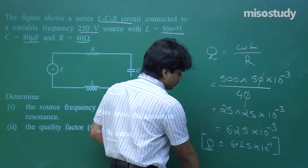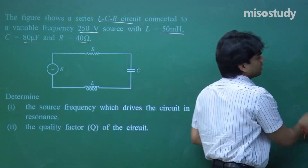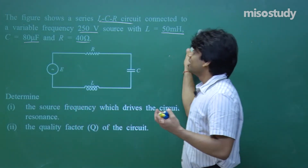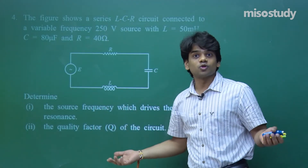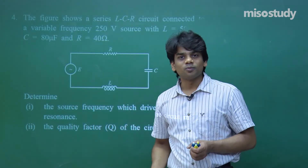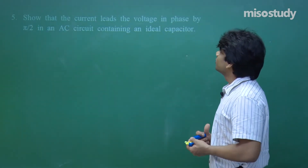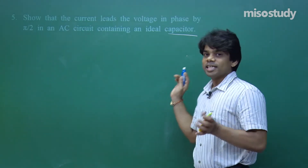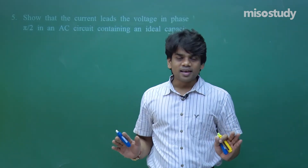Hope you are getting this. Solving questions is required for getting a hold of any chapter — it is very important for you all to practice more questions. If you practice more, certainly you are going to score more and your preparation will be very good. Question number 5: show that the current leads the voltage in phase by π/2 in an AC circuit containing an ideal capacitor. This is a theoretical question we have done in our regular theory class.